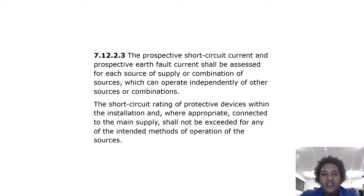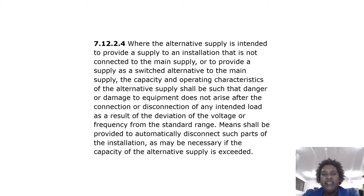The short circuit rating of protective devices within the installation, and where appropriate connected to the main supply, shall not be exceeded for any of the intended methods of operation. Where the alternative supply provides supply to an installation not connected to the main supply, or as a switched alternative, the capacity and operating characteristics shall be such that danger or damage to equipment does not arise. Means shall be provided to automatically disconnect parts of the installation if the capacity of the alternative supply is exceeded.